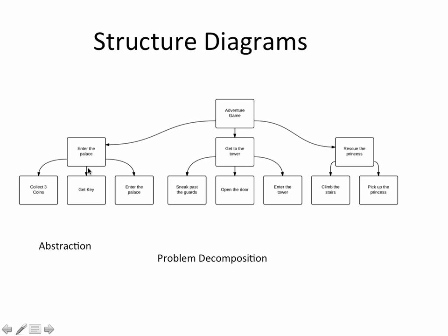And so the use of a structure diagram is principally to break down a problem into smaller pieces, and we call that problem decomposition. The reason for doing this is that it defines scope, so we know how much work we need to do before we start coding the problem. And also, it identifies the subroutines within the program. A subroutine is a smaller part of a program. So the subroutines within this adventure game might be entering the palace, getting to the tower, and rescuing the princess.